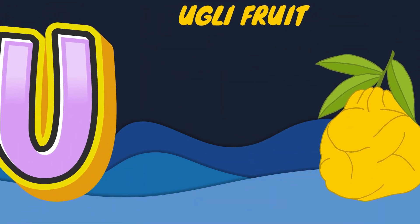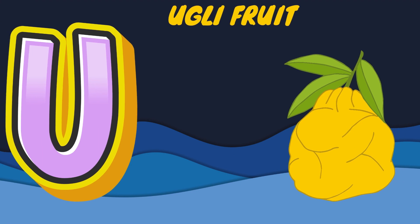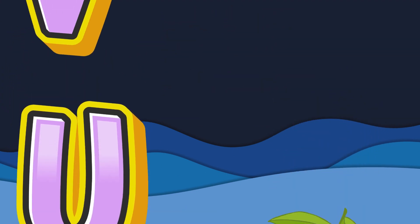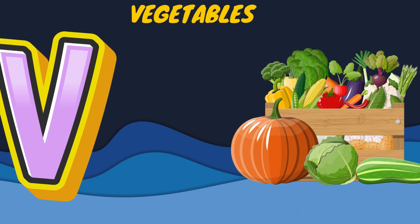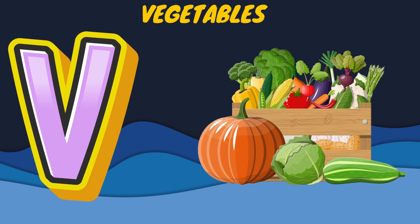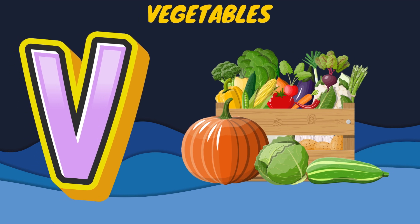U is for ugly fruit, uh, ugly fruit. V is for vegetables, vh, vegetables.